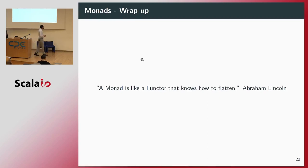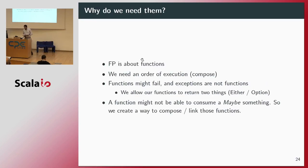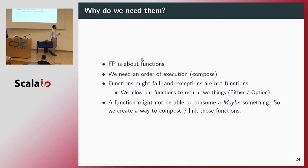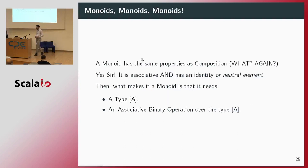As Abraham Lincoln said, a monad is like a functor that knows how to flatten. More seriously, a monad glues things together — more precisely, it composes things. Why do we need them? Functional programming is all about functions, so we need an order of execution, and this comes with composition. These functions might fail, and an exception is not a function so it doesn't enter the scope of functional programming. So we can allow our functions to return two things — either Option or whatever — and thanks to monads, we create a way to compose and link those functions.